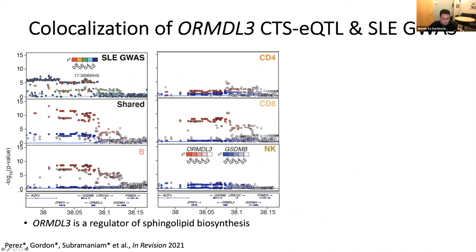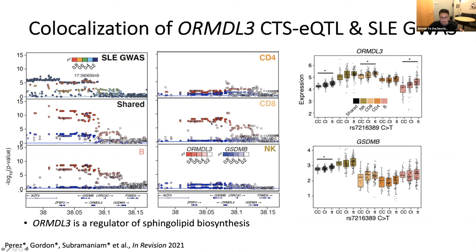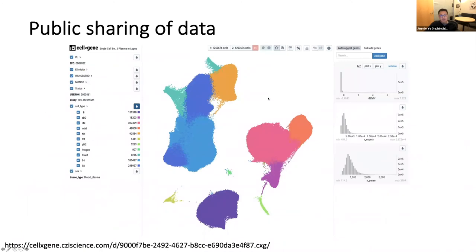In our dataset, IKZF3 is not associated with any genetic variants in this locus, and Gasdermin B is associated in the shared compartment across cell types but not nearly as significantly as ORMDL3. What's really interesting is that in the cell-type-specific part, there's an additional genetic association in B cells and CD8 T cells but not CD4s for ORMDL3 — even though CD8s and CD4s share a lot of the same genetic architecture. This data has been made public at the CellxGene portal hosted by CZI, available well before the paper was even accepted, and everyone is welcome to explore it.